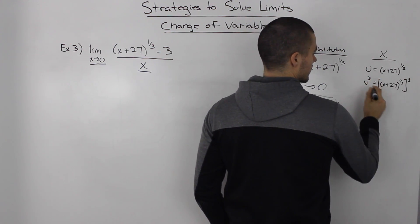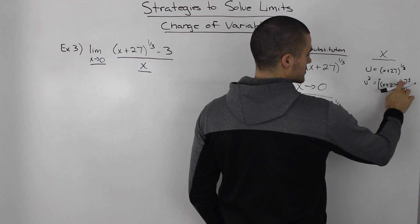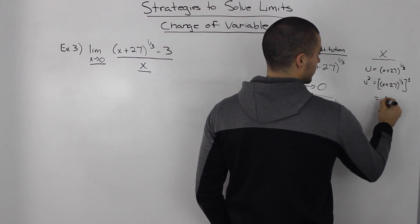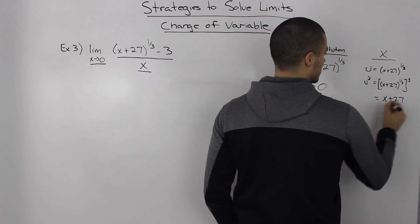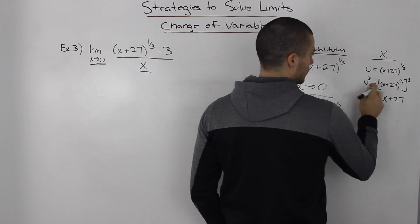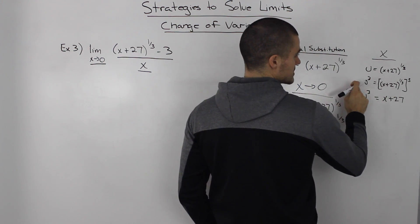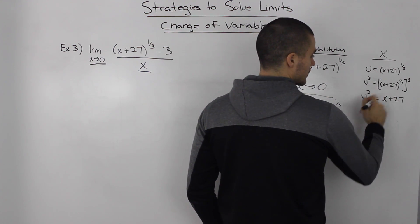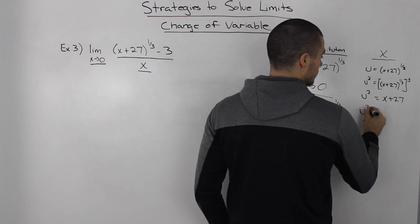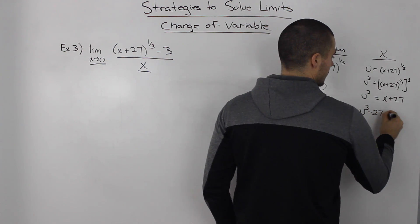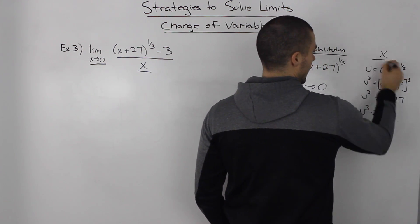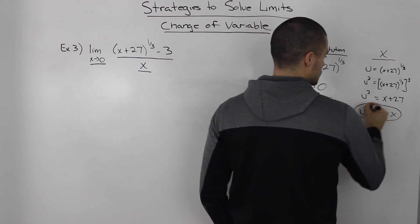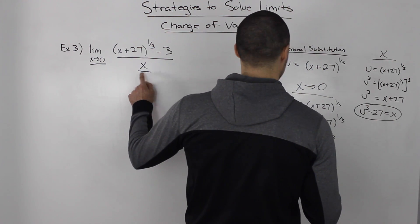Because 1/3 times 3 is 1, we'll end up with x+27, and we'll have u^3 on this side. Since we took this side to the power of 3, we've got to take the other side to the power of 3 as well. Bringing the 27 over, we get x = u^3 - 27.